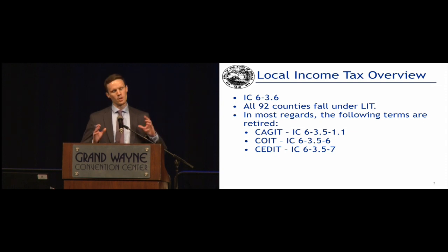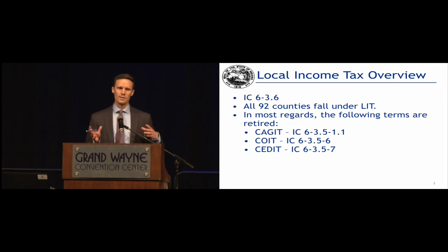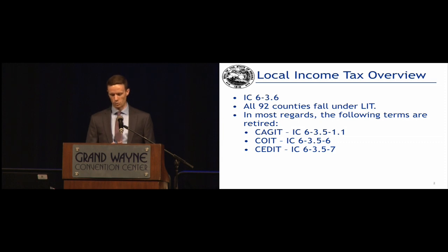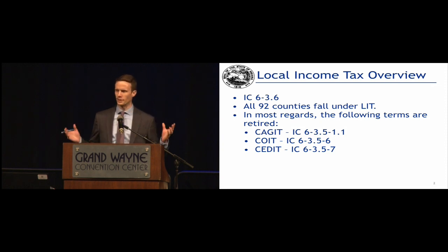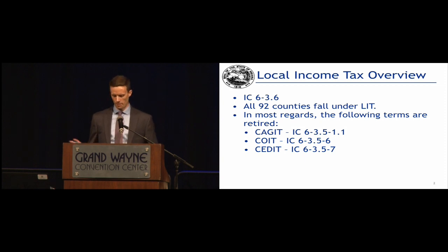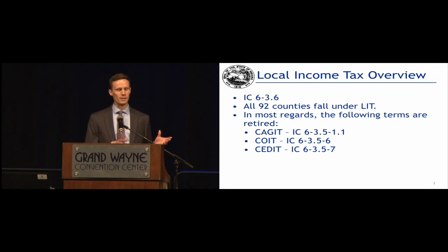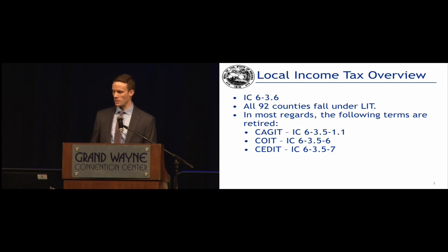Local income taxes are found at IC 6-3.6. The language around it changed a couple years ago where we're no longer referring to LOWIT, but instead we're referring to LIT, which stands for local income taxes. So broadly speaking, the terms CAGIT, COIT, and CEDIT — those terms are retired. We don't use them for very much any longer, with just a rare exception or two for either cleanup items or for the current supplemental distribution, which we'll talk about here in just a few minutes.